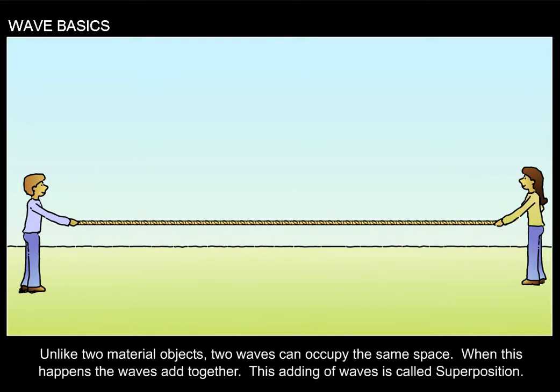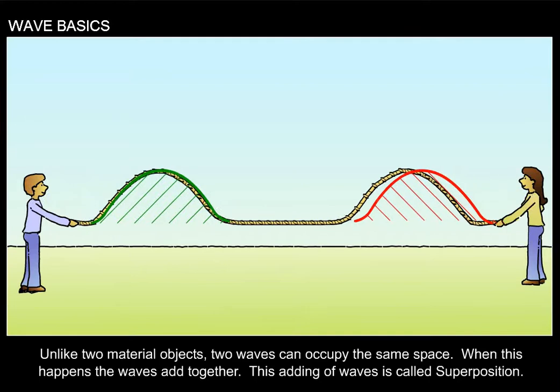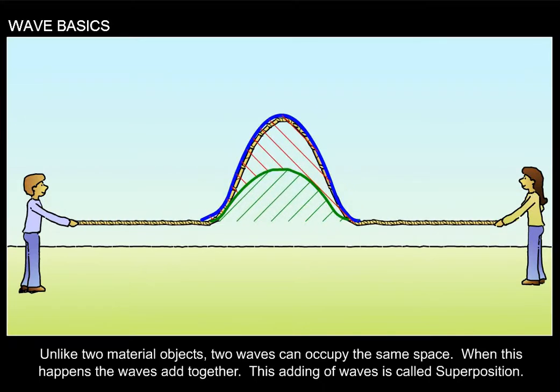Unlike two material objects, two waves can occupy the same space. When this happens, the waves add together. This adding of waves is called superposition.